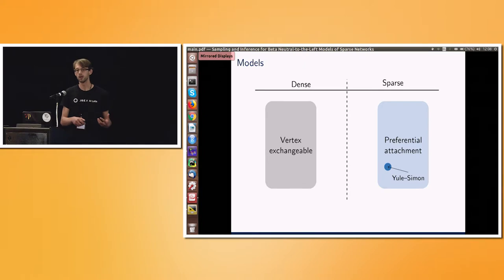On the other hand, we could throw out exchangeability. So I have no exchangeability at all. And a class of models which took this approach were preferential attachment models, like Yule-Simon. And instead, they took this ruling paradigm that the rich get richer. Vertices that are already connected highly by many edges are likely to be connected to again. And these do give sparse networks, but they don't have tractable inference because we haven't got any exchangeability to exploit.